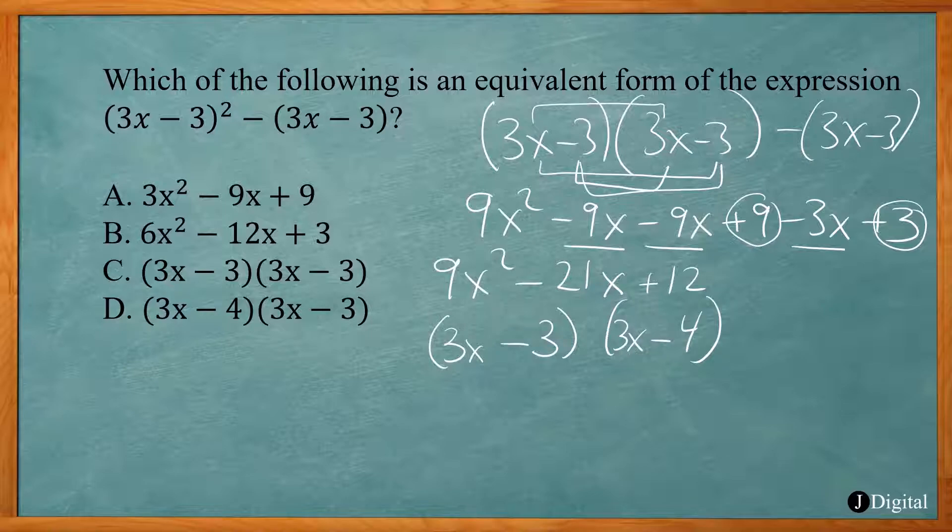So -3. 3 times -4 gives me -12. -3 times 3 gives me -9. So 9 and 12 give me the 21 that I need that's in the middle here. So (3x - 3)(3x - 4). Okay, that would be answer choice D.